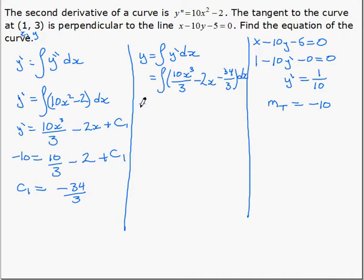And that gives us 10x to the 4 over 3 stayed with over 4 gives us 12, 3 times 4, minus 2x squared over 2, minus 34 over 3x plus a second constant.